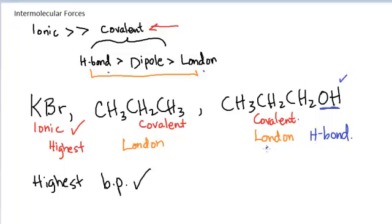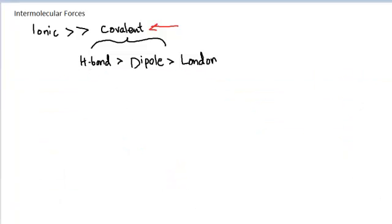So propanol would be my second highest boiling point, and propane would be my lowest boiling point. That's what I'm analyzing to determine the order of boiling points or melting points — this same technique works for both. Now let's look at another set of compounds and determine the order of boiling points.